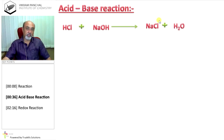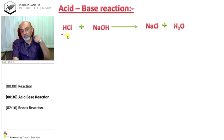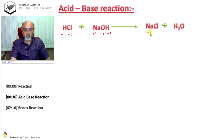To find out whether it is acid-base reaction or not, you have to find out oxidation number of elements. Oxidation number of hydrogen is plus 1, chlorine minus 1. In NaOH, sodium plus 1, oxygen minus 2, hydrogen plus 1. In NaCl, sodium plus 1, chlorine minus 1. In H2O, hydrogen plus 1, oxygen minus 2. So, here you can see there is no change in oxidation number of any element.